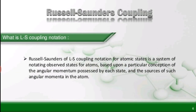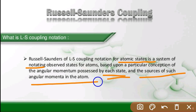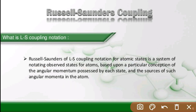What is LS coupling notation? Russell-Saunders or LS coupling notation for atomic states is a system of notations for observed states of atoms, based upon a particular conception of the angular momentum possessed by each state and the sources of such angular momenta in the atom. LS coupling is based on two types of angular momenta: orbital angular momentum L and total spin angular momentum S.